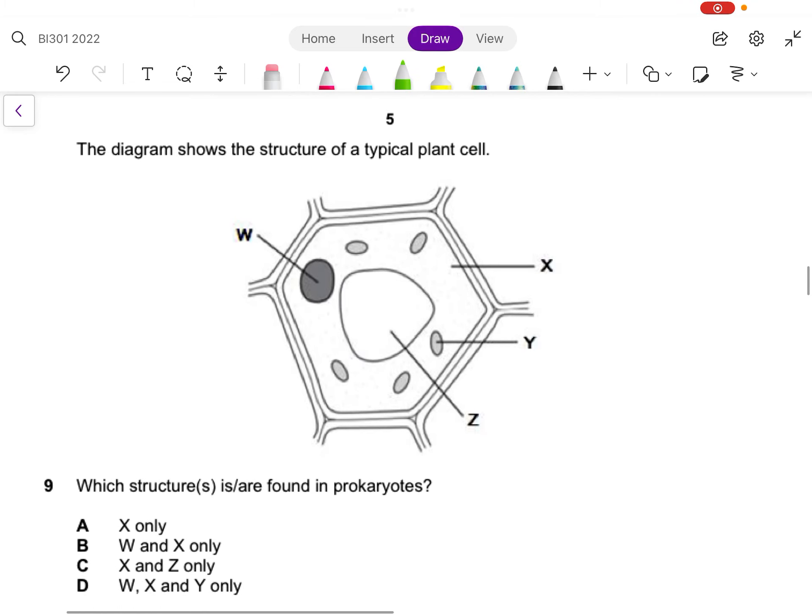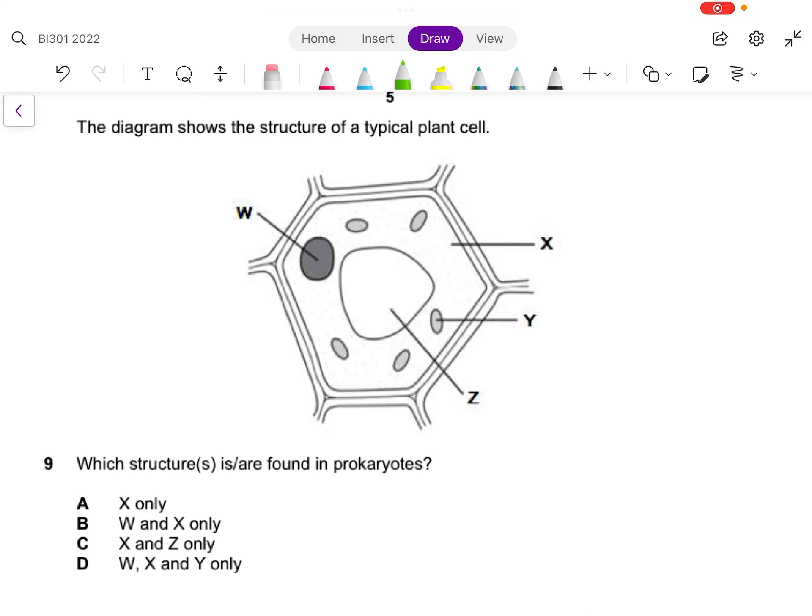Let's go to question nine. Question nine shows a plant cell. They ask which structure is also found in prokaryotes. If you look into your notes, prokaryotes are cells that do not come with any membrane-bound organelles. When we say membrane-bound organelles, we mean to say that it doesn't have a nucleus, doesn't have the endoplasmic reticulum - anything that comes with membranes within itself, it does not have.